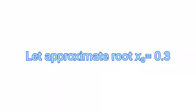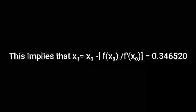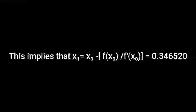By Newton-Raphson method, new approximate root x = x - f(x)/f'(x). Now f(x) = 0.127 and f'(x) = 3x² - 3 = -2.73. This implies x₁ = x₀ - f(x₀)/f'(x₀) = 0.346520.